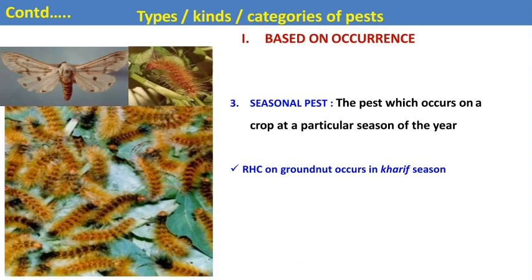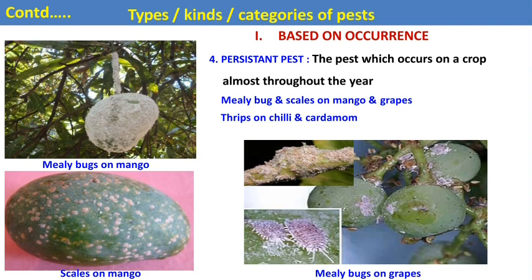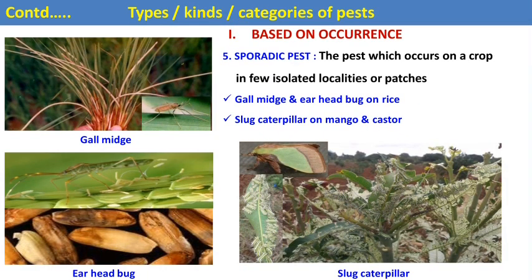The third is the seasonal pest — pests which occur in particular seasons of the year. Some pests occur in the kharif season, rabi season, or summer season. For example, the red hairy caterpillar occurs on groundnut crop in the kharif season, and wheat aphids occur on wheat in the rabi season. The fourth is the persistent pest — pests that occur on the crop almost throughout the year, such as mealybugs and scales on mango and grapes, and thrips on chilies and cardamom.